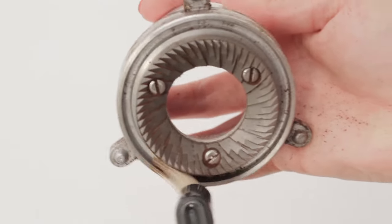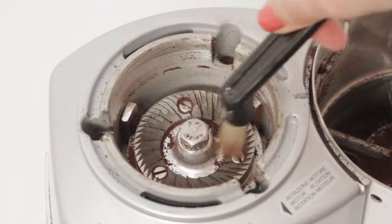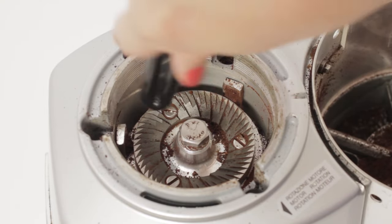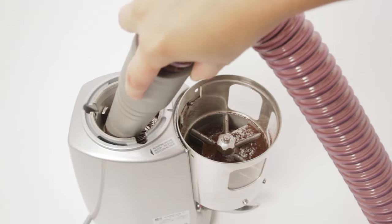Using a grinder brush or other stiff brush, thoroughly clean the burrs, plates, neck and threads. Use the brush to loosen any accumulated material. Now using a vacuum, remove any loose debris.